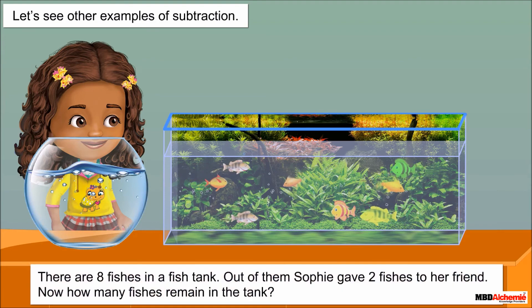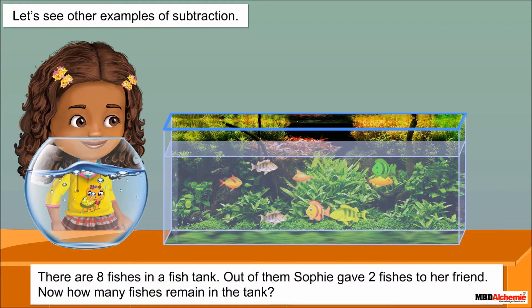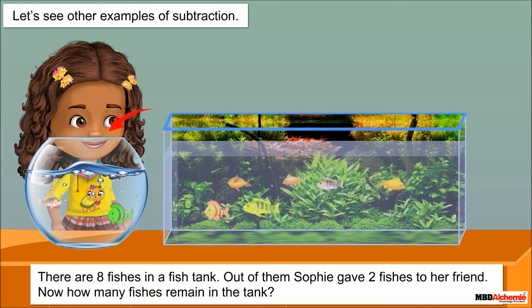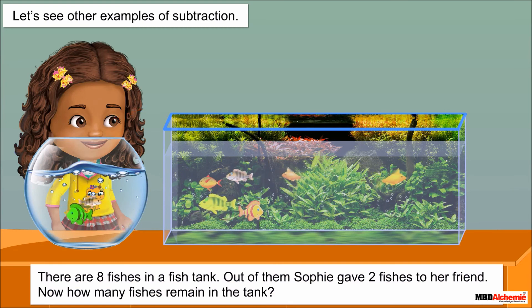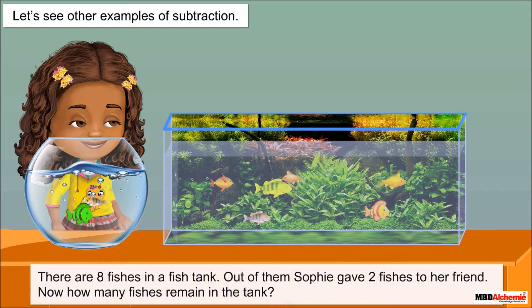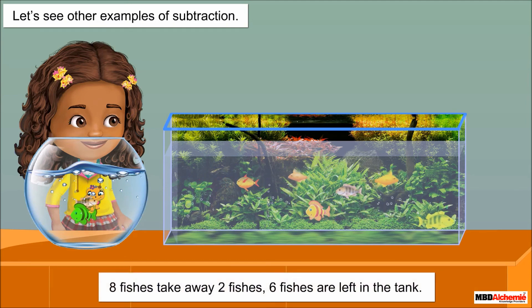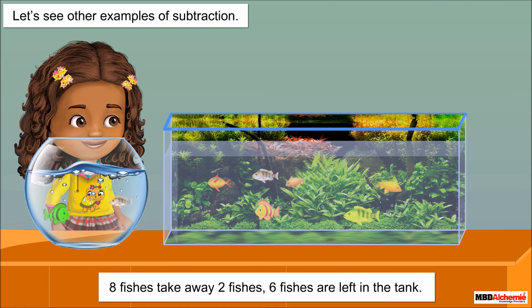There are eight fishes in a fish tank. Out of them, Sophie gave two fishes to her friend. Now, how many fishes remain in the tank? Eight fishes take away two fishes — six fishes are left in the tank.